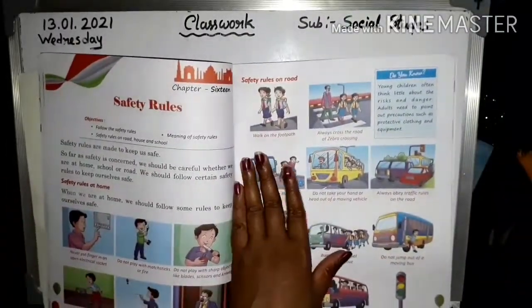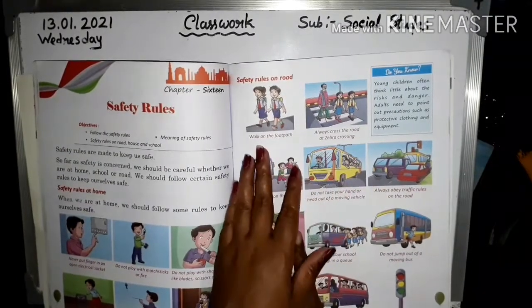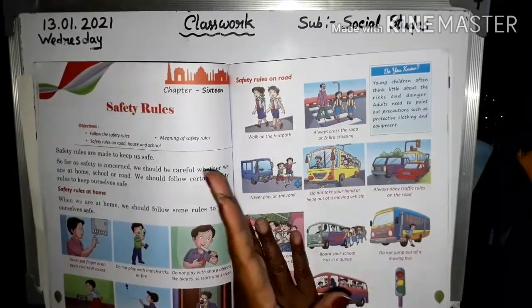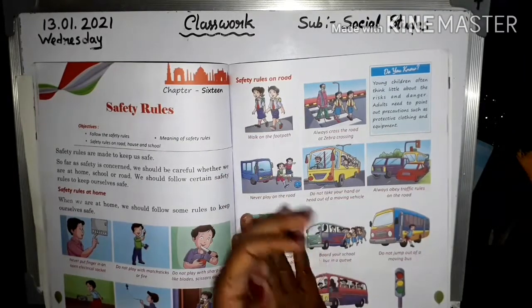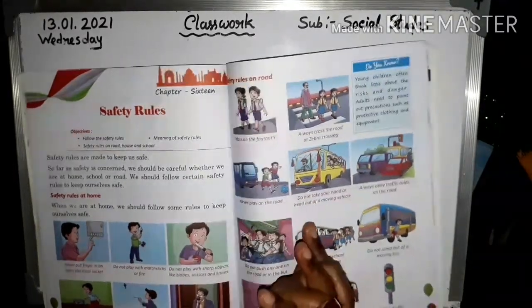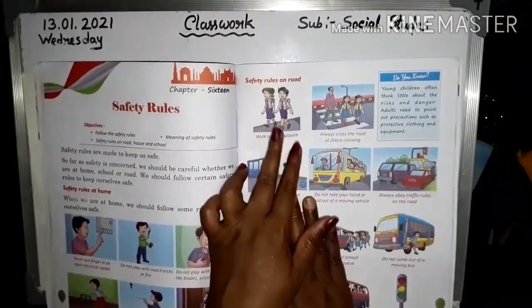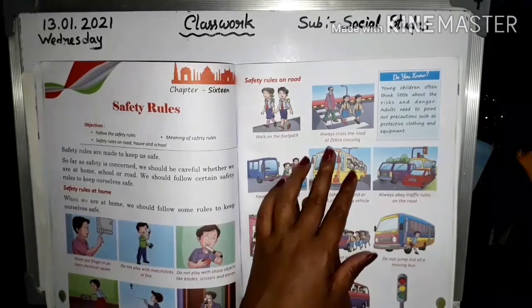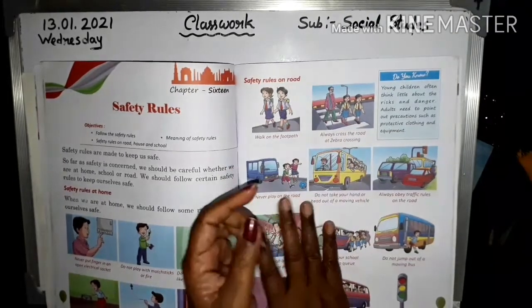Safety rules on road. अभी आप लोग पढ़ चुके हो home का safety rules — अब पढ़ेंगे safety rules on road. Walk on the footpath. Always cross the road at zebra crossing — zebra crossing से ही पार होना चाहिए।